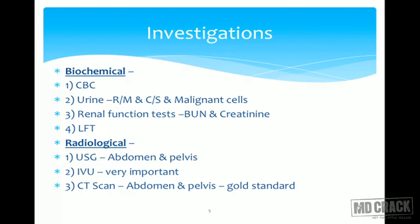Radiologically, ultrasonography of the abdomen and pelvis will give a broad outline of tumor location, tumor size, other morphological features, and morphology of the affected kidney. Intravenous urography is also considered important, but now CT scan of the abdomen and pelvis, plain plus contrast, gives better delineation of the tumor and helps in staging. Hence, CT abdomen and pelvis is considered the gold standard investigation of choice in Wilms Tumor.